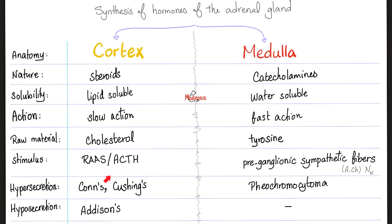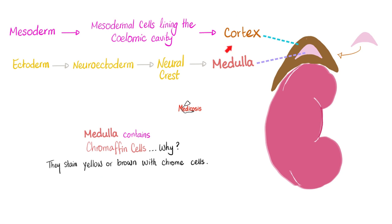Hypersecretion from the cortex is known as Conn's syndrome if talking about aldosterone, or Cushing's syndrome if talking about cortisol. Hyposecretion is called Addison's disease. Hypersecretion in the medulla is called pheochromocytoma, with excess catecholamines like epinephrine, norepinephrine, and dopamine. The adrenal cortex comes from the mesoderm, while the adrenal medulla comes from the ectoderm because it is part of the nervous system.